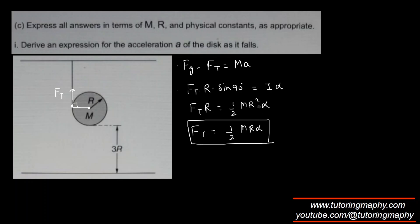And this FT I'm going to plug in over here. What is FG? FG is just MG. So MG minus half MR alpha equals MA. And by the way there is a beautiful relationship between acceleration and alpha. Acceleration is downwards and we know that acceleration is alpha R.